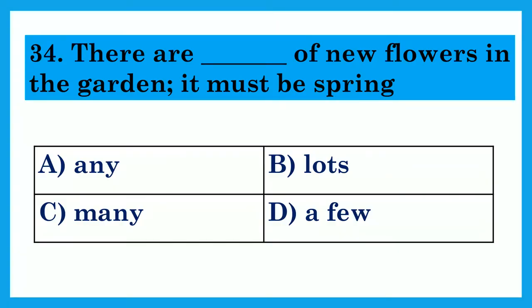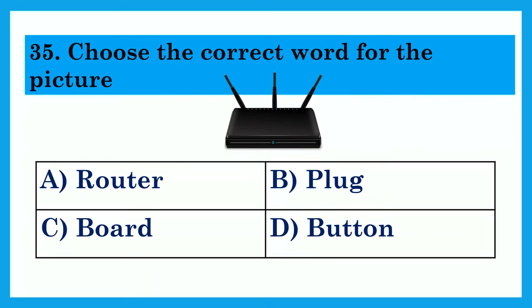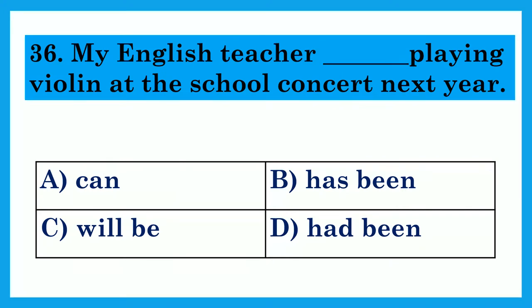Achieve section. There are dash of new flowers in the garden. It must be spring. Option A: Any. Option B: Lots. Option C: Many. Option D: A few. The answer is Lots — There are lots of new flowers in the garden. It must be spring. Choose the correct word for the picture. Option A: Router. Option B: Plug. Option C: Board. Option D: Button. The answer is Router. My English teacher dash playing violin at the school concert next year. Option A: Can. Option B: Has been. Option C: Will be. Option D: Had been. The answer is Will be — My English teacher will be playing violin at the school concert next year.